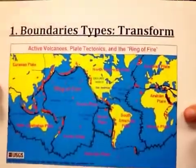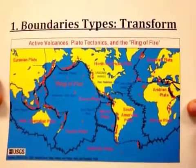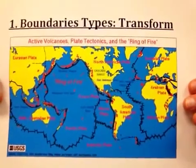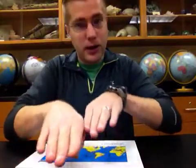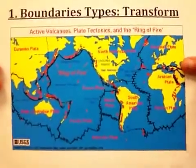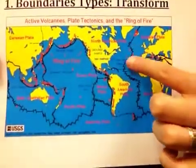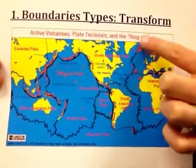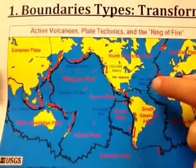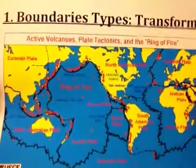The third type of plate boundary is a transform plate boundary. At a transform boundary, you do not have pulling apart or pushing together — instead, one plate slides along the other. The motion is like a DJ scratching records. When we look for transform plate boundaries on the planet, we can see that a mid-ocean ridge is cut across and broken into offset sections. Each of those lines cutting across the mid-ocean ridge is a transform plate boundary.